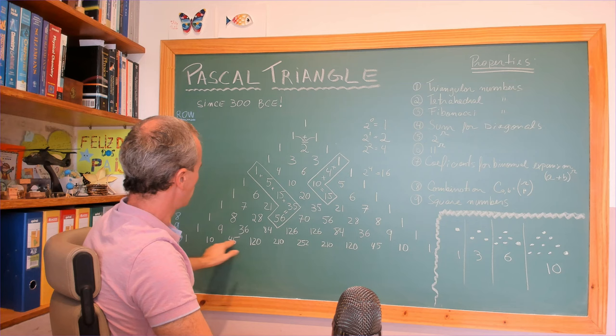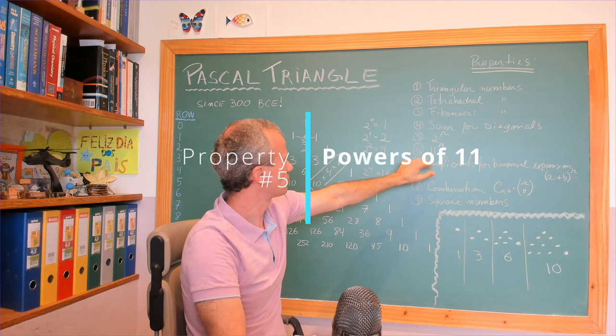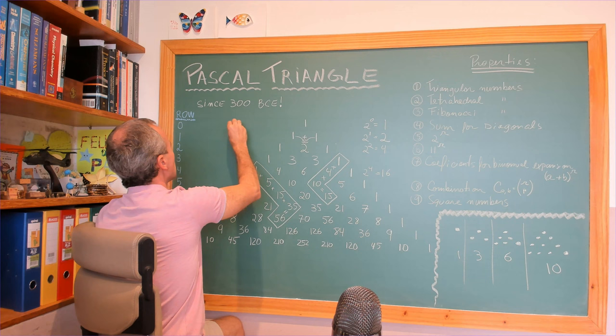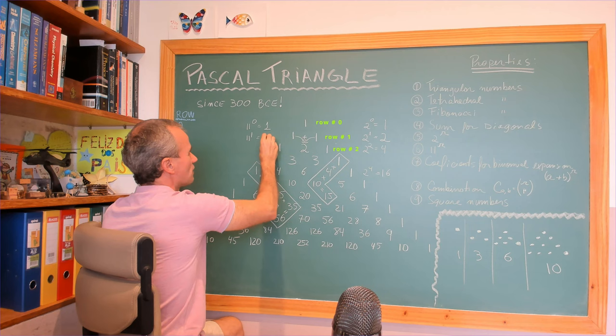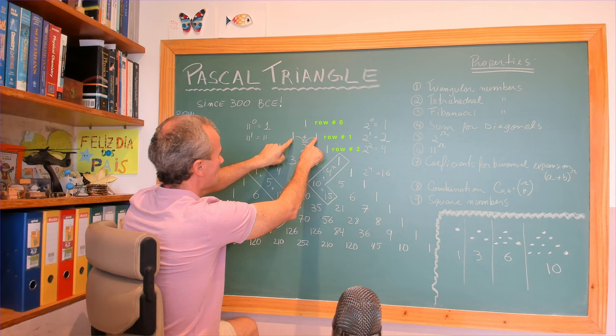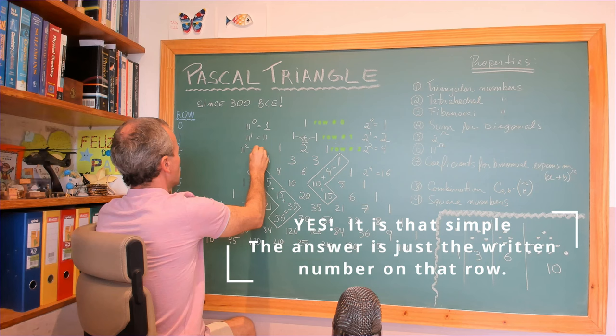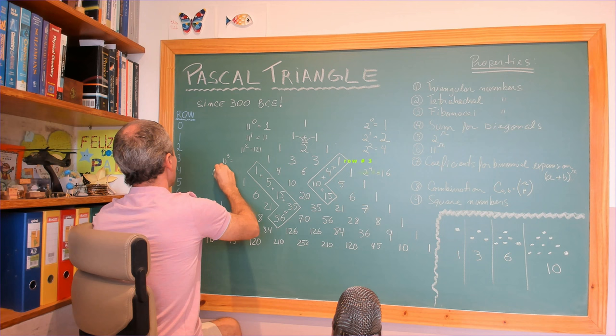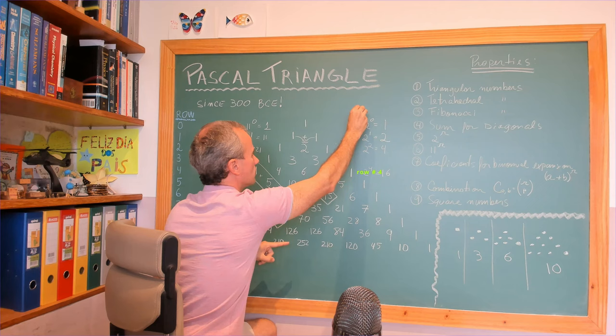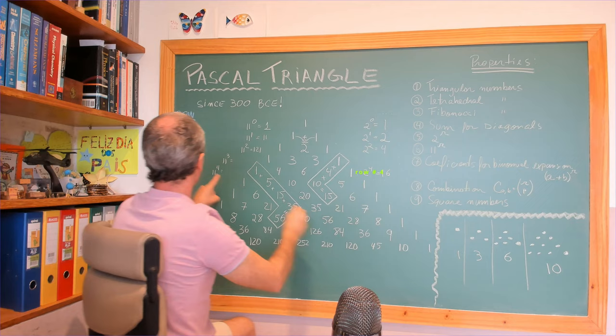This is another very interesting property: 11 to the power r, which is the row. What is 11 to the power zero? One — just read the row. This is the most impressive for me. 11 to the first power: one and one is 11. 11 to the second power, second row: 121. What is this? 121. It's amazing. 11 to the third power is going to be 1331. 11 to the fourth power is going to be 14,641, and so on.